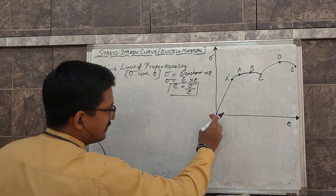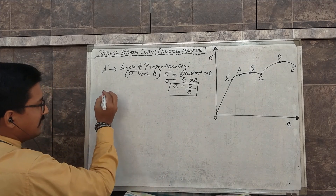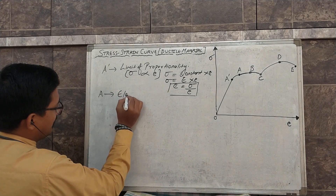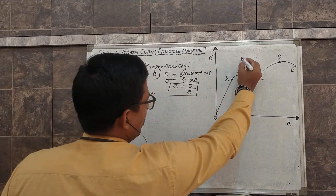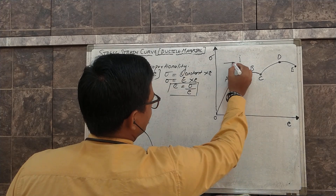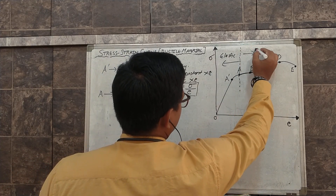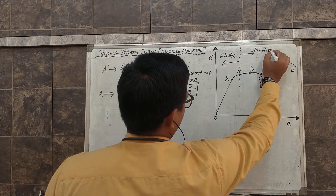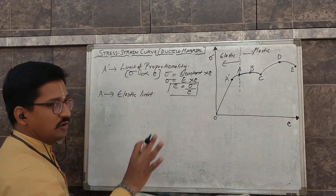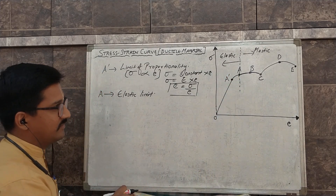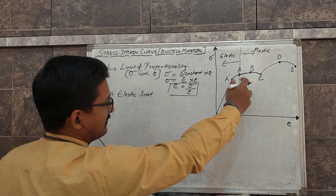After A dash, we can see the graph becomes non-linear up till point A. Point A is our second point, which is the elastic limit. This point basically divides our region into elastic and plastic zones. Up till point A, the material will be elastic in nature — meaning on removal of load, the material can come back to its original size and shape. This is the elastic region. If we cross point A, the material will enter the plastic region.